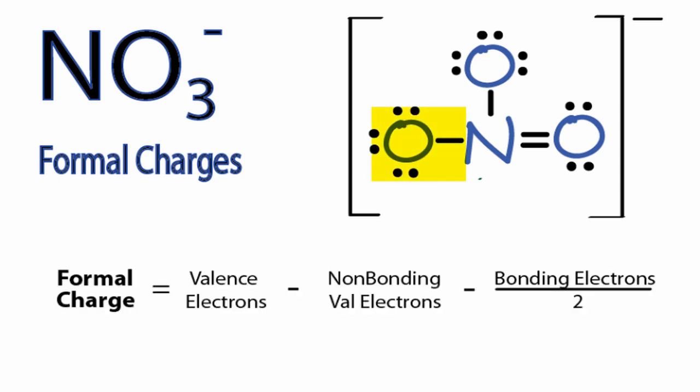Let's look at the oxygen on the left first. That'll be the same as the one on the top. So on the periodic table, oxygen is in group 6 or 16. It has 6 valence electrons. And then non-bonding electrons, that's the electrons that are not involved in chemical bonds.